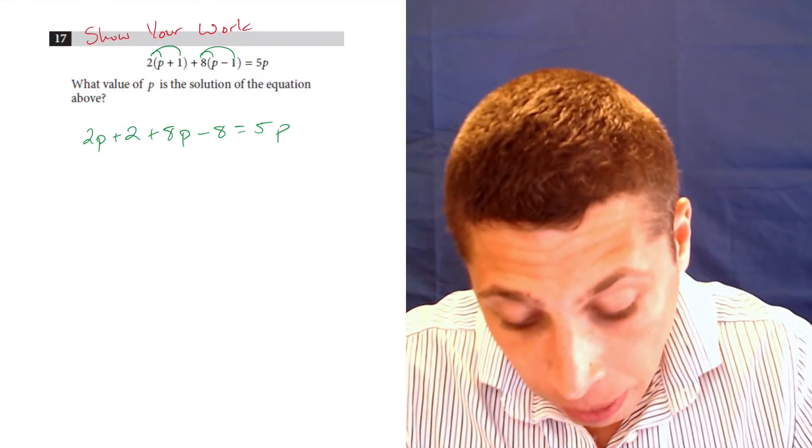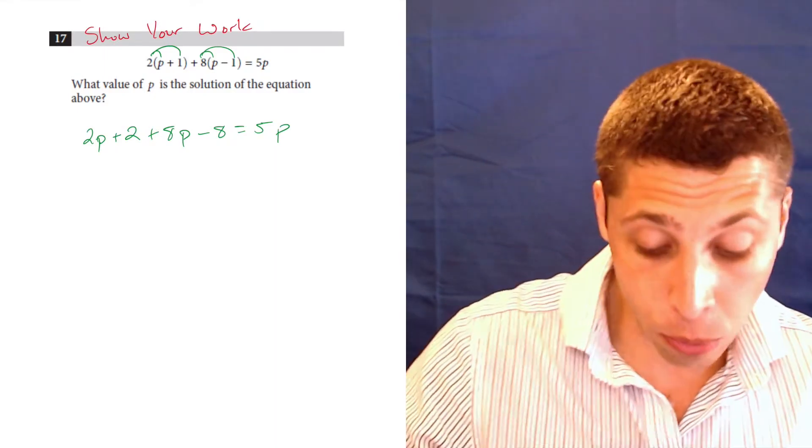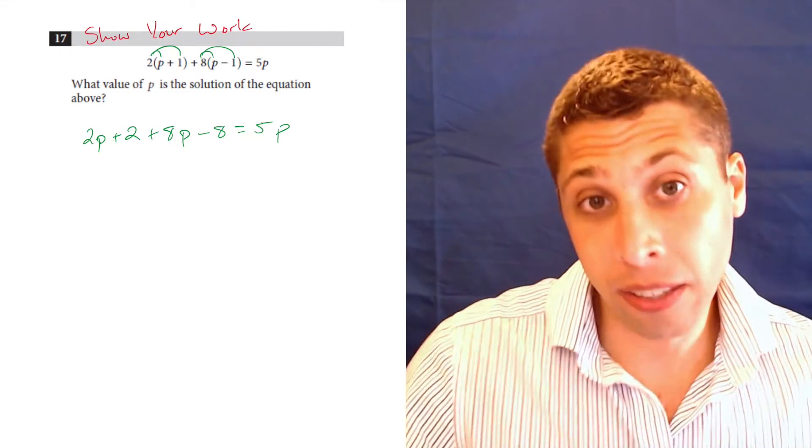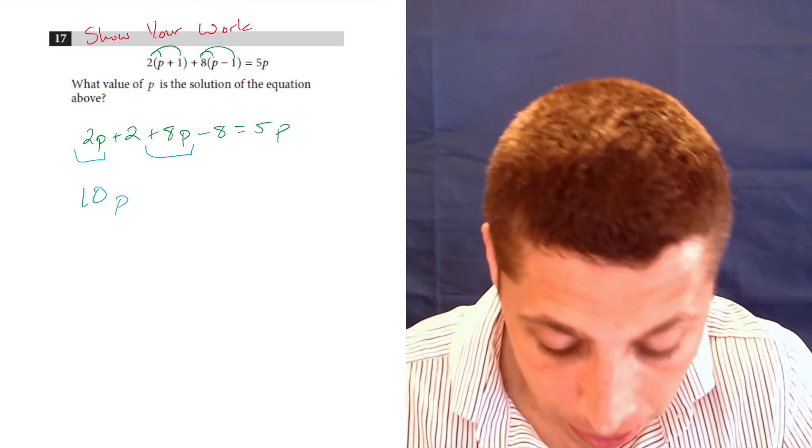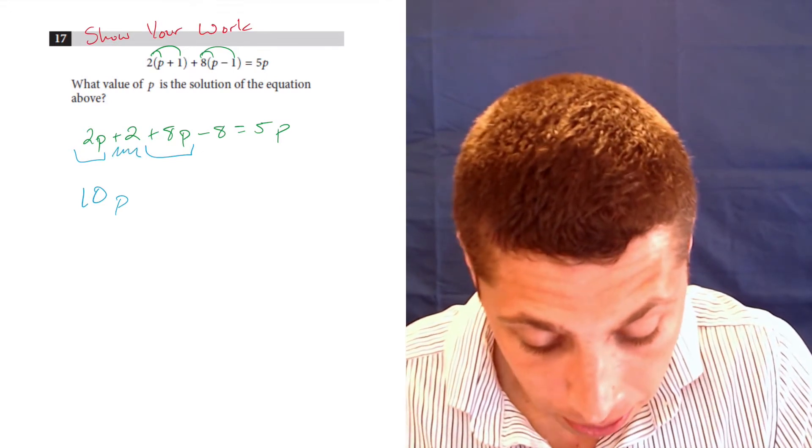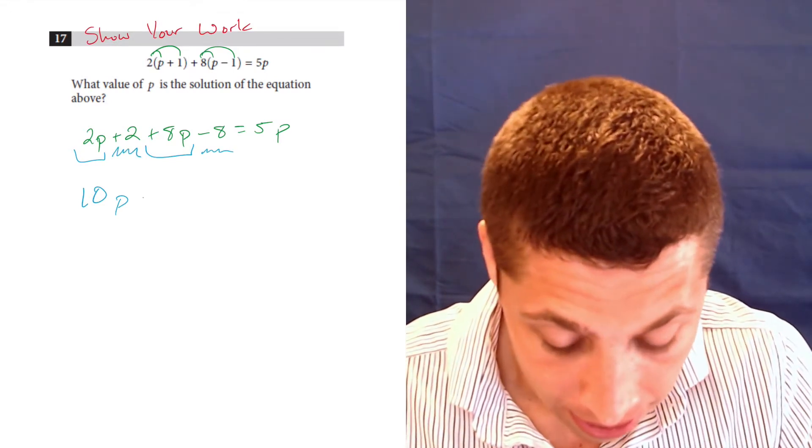Now we've got to combine like terms. Again, there's danger here, we could combine in a way that we lose a negative or something, so I'm going to say 2p plus 8p is 10p, and then 2 minus 8 is negative 6.